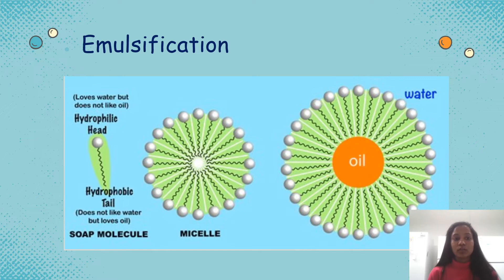In our body, we have bile but in this experiment, we will be using soap which has a structure similar to bile. Polar head is called hydrophilic because it likes water. Non-polar tail is called hydrophobic because it doesn't like water.